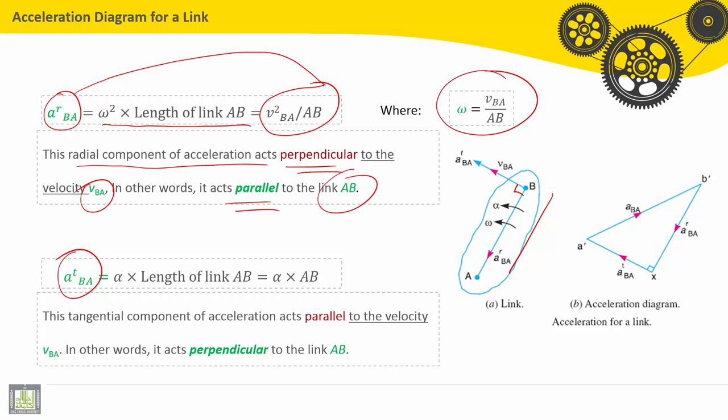How about the tangential component? A^T_BA is equal to alpha, which is the angular acceleration multiplied by the link length. So, it is equal to alpha multiplied by AB.